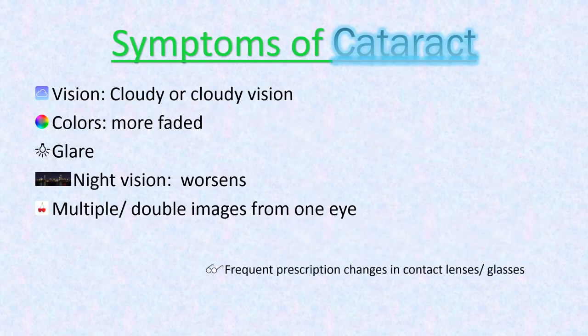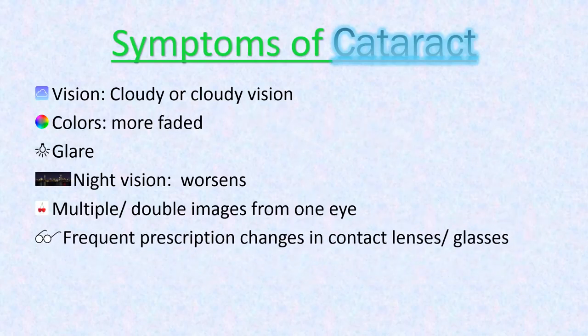Night vision worsens. Multiple images or double vision from one eye — this symptom may disappear as the cataract gets larger. Frequent prescription changes in contact lenses or glasses can also be an important sign of a cataract.